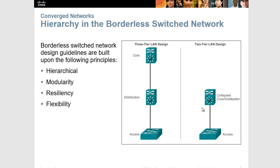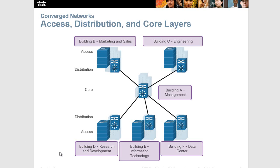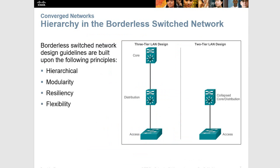Modularity basically allows you to add to your network setup as you need to — the ability to add or subtract as need be. Resiliency is whether your network is always on. Flexibility is whether you can share or use resources in the most efficient way possible to meet end-user demands. Those are things that go into your borderless switched network, and we discussed this a bit in CCNA1. You have an example of your access distribution — your lower-powered routers — and your core with higher-powered routers, and typically you'll combine those two into your collapsed core distribution model.